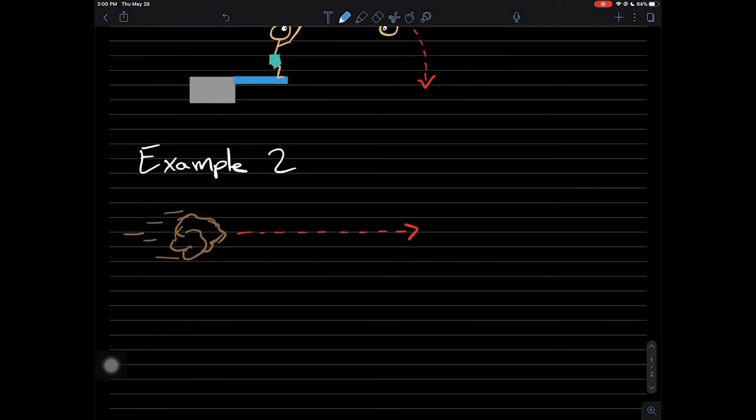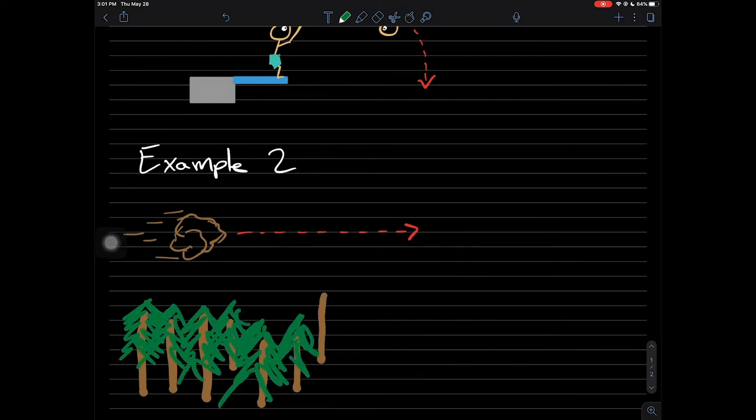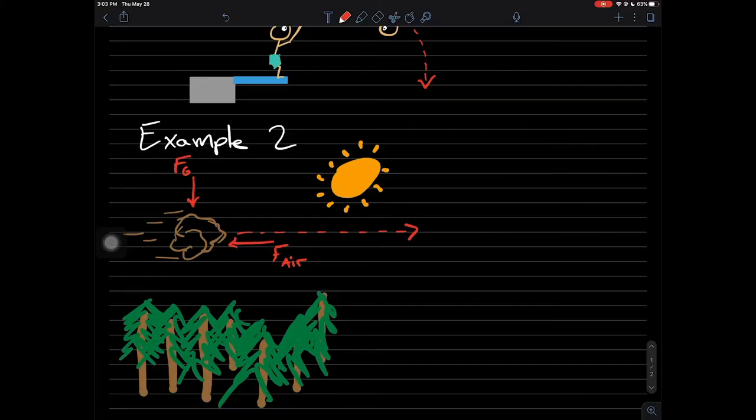So let's clear that scene. I'm going to draw some trees. Draw out a nice sun to show that it's on Earth. Okay, and I'm going to draw in the forces. So now we do have gravity acting on this rock. And we also have air resistance.